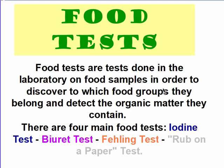Another topic in activity one is food tests. If I want to know what a food sample contains, there are tests called food tests, done in the lab using certain chemical reagents. These allow us to discover the constituents of a food sample. There are four food tests you need to know: iodine test, biuret test, Fehling test, and rub-on-paper test.